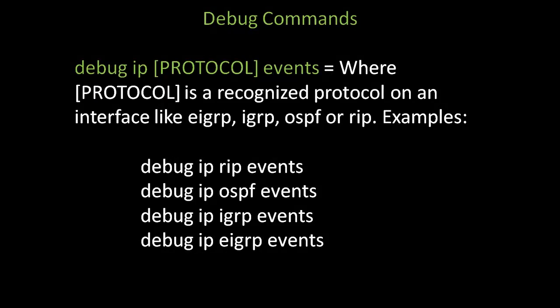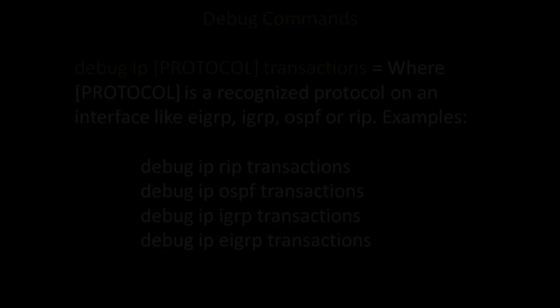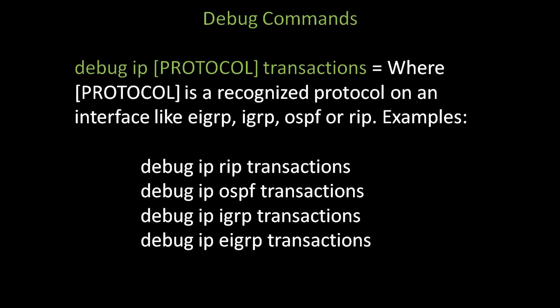Another example is debug ip protocol events, where protocol is a recognized protocol like EIGRP, IGRP, OSPF, or RIP — such as debug ip rip events, debug ip ospf events, debug ip igrp events, and debug ip eigrp events. Yet another example is debug ip protocol transactions — for example, debug ip rip transactions, debug ip ospf transactions, debug ip igrp transactions, and debug ip eigrp transactions.